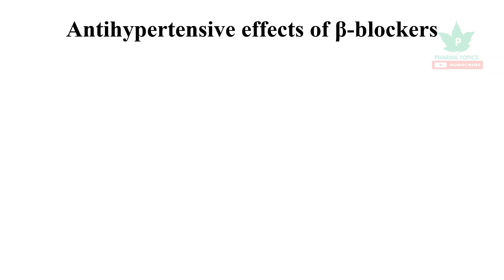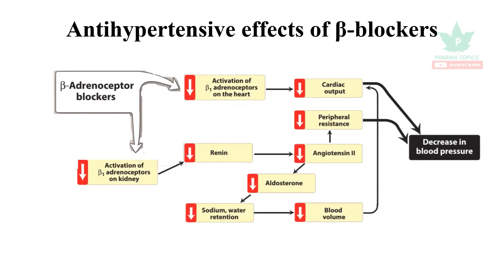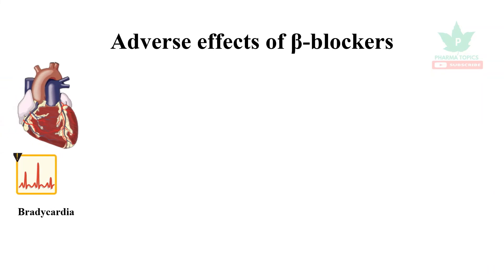Regarding the antihypertensive effects of beta blockers: when given, beta-1 receptors in the heart are blocked, reducing cardiac output. Beta-1 receptors in the kidney are also blocked, reducing the renin-angiotensin-aldosterone system (RAAS) activity, which decreases peripheral vascular resistance. Together, these mechanisms decrease blood pressure. Adverse effects include bradycardia and cold extremities in patients with peripheral vascular disease.